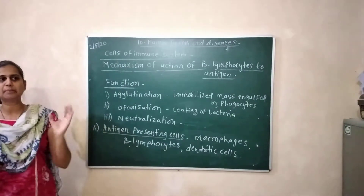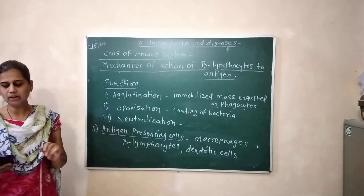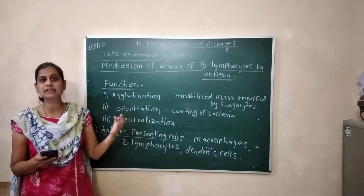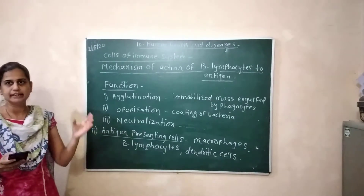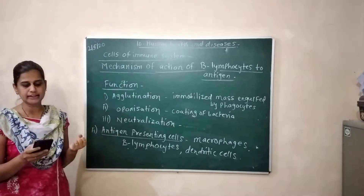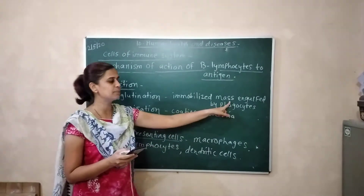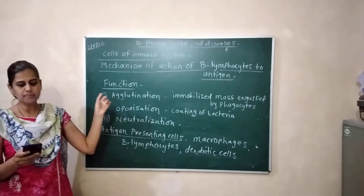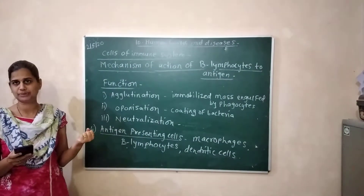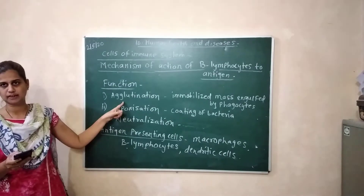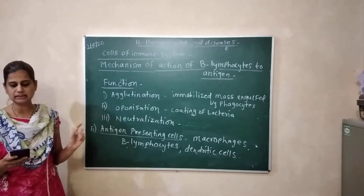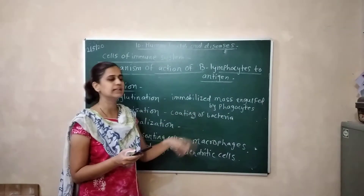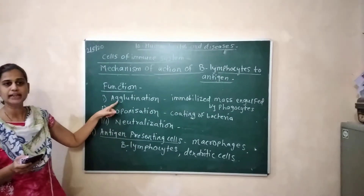The first function is agglutination. Particulate matter such as bacteria or viruses are agglutinated — that is, clumped together — and the immobilized mass is then engulfed by phagocytes. This is the work of agglutination.